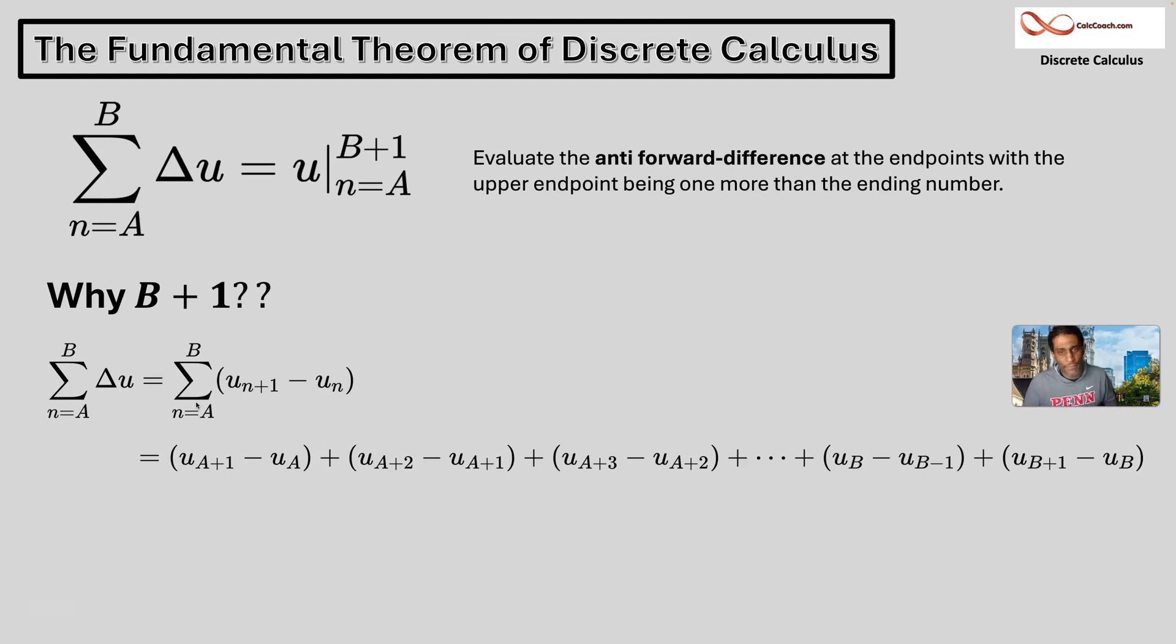Okay, plug in A, plug in A plus one, plug in A plus two, plug in B minus one, the one right before the end, and then plug in B. And watch the cancellation, watch the telescoping.